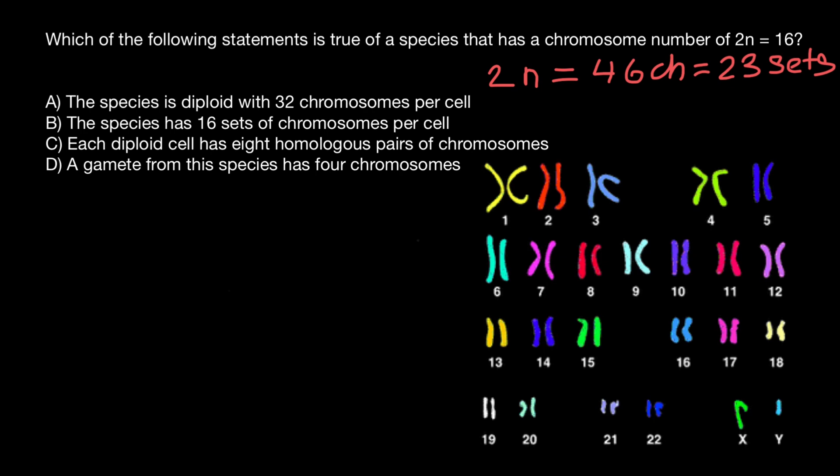And in gametes, for example, in egg cells or sperm, we can find 23 chromosomes. And we are not going to find any pairs, because only one chromosome from each pair we will find in the gamete. Let me add the sign here so you would also remember that a gamete is haploid and represented by a sex cell, which can be sperm or egg.